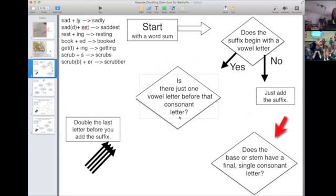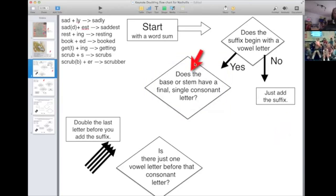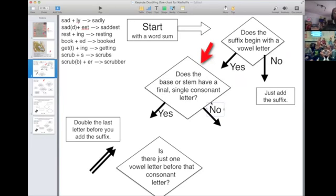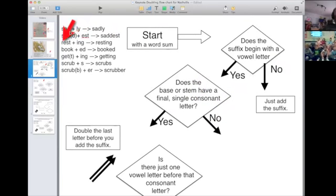And then what if that isn't true? We will have two answers to that one. Let's do that, let's see what happens. So that could be no or yes. What happens if the base or stem doesn't have a final single consonant? Look at this word here, what is that word? So let's ask this: does the vowel, does the suffix begin with the vowel letter? In resting, does the base or stem have a final single consonant? No, because there's an ST. Do we double? No. So I think what happens is we just figured out this. If this is no, we just go over here.